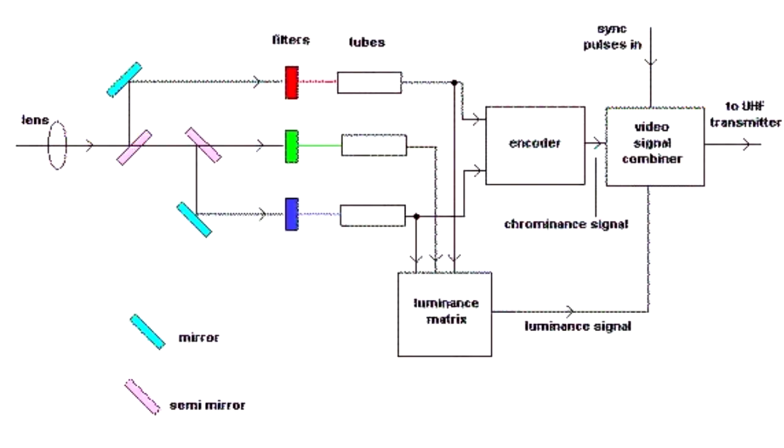You had a red pickup tube, green pickup tube, blue pickup tube, and in lots of cameras, a luminance pickup tube, and that was all color-plexed into a signal that would then feed the CRT.